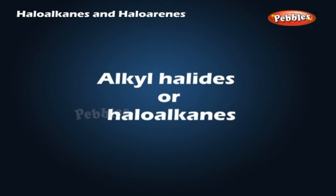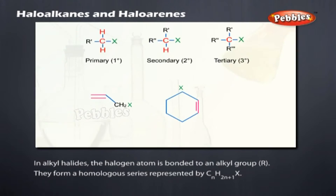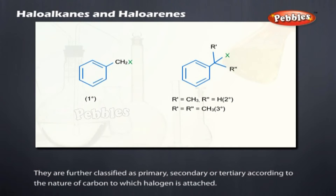Alkyl halides or haloalkanes: in alkyl halides, the halogen atom is bonded to an alkyl group R. They form a homologous series represented by CnH2n+1X. They are further classified as primary, secondary, or tertiary according to the nature of the carbon to which the halogen is attached.